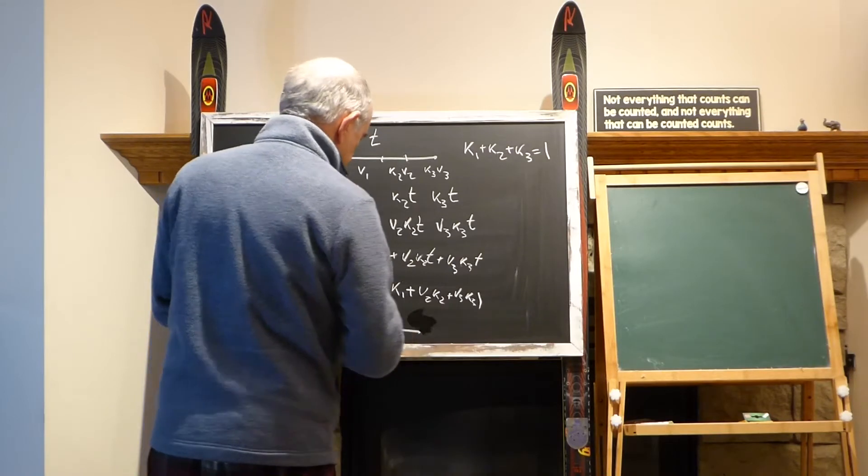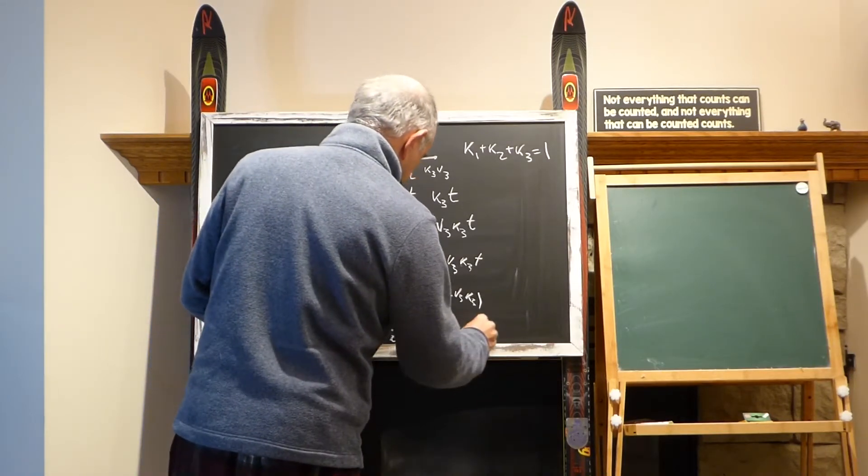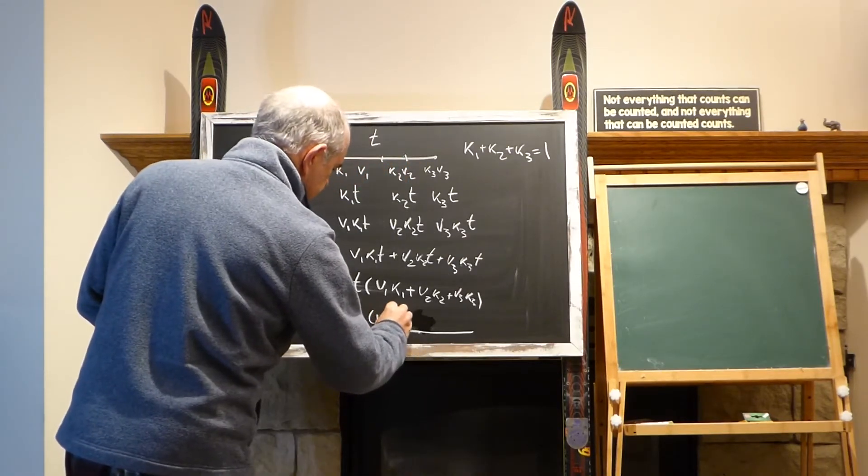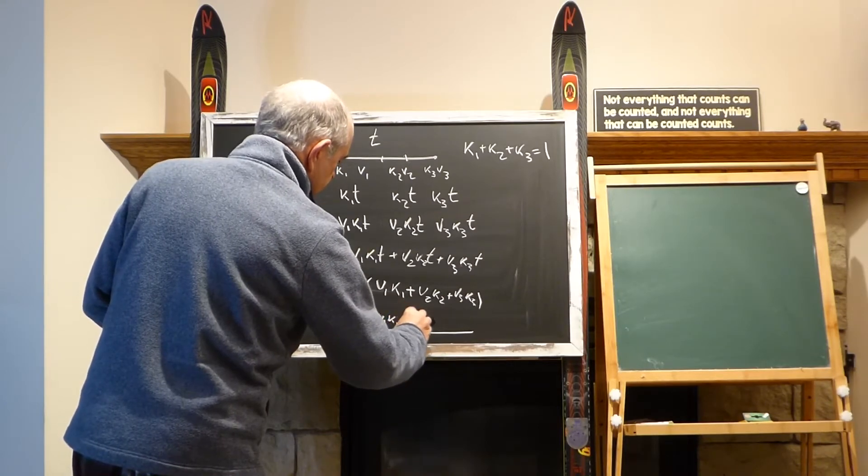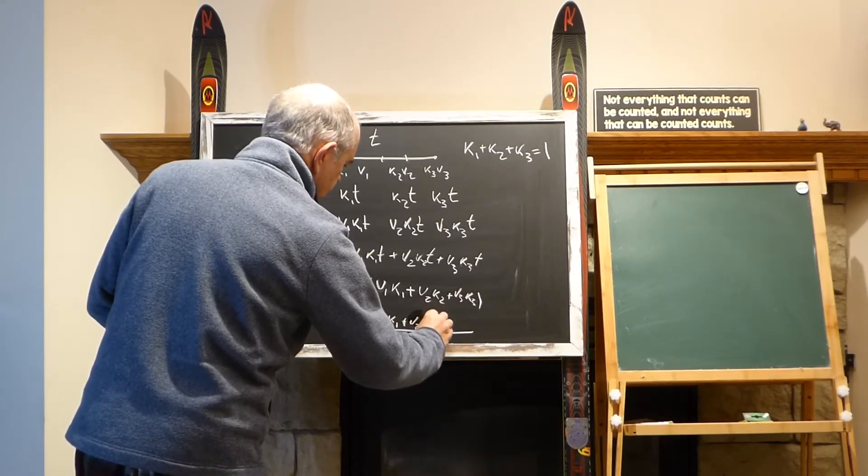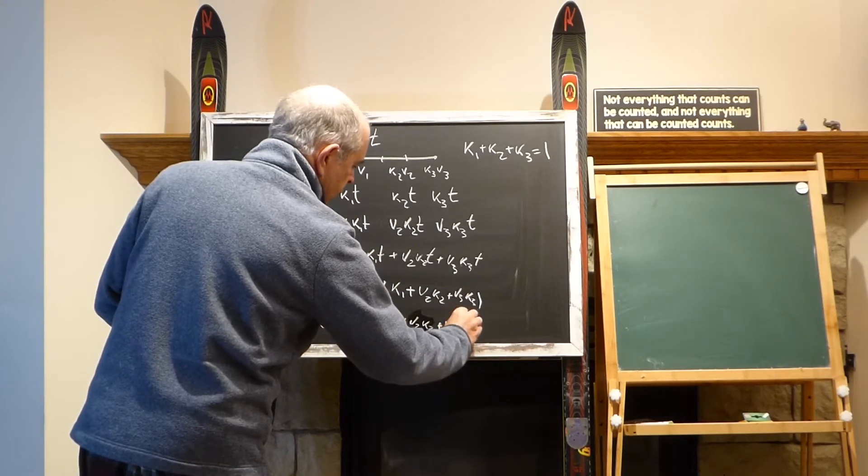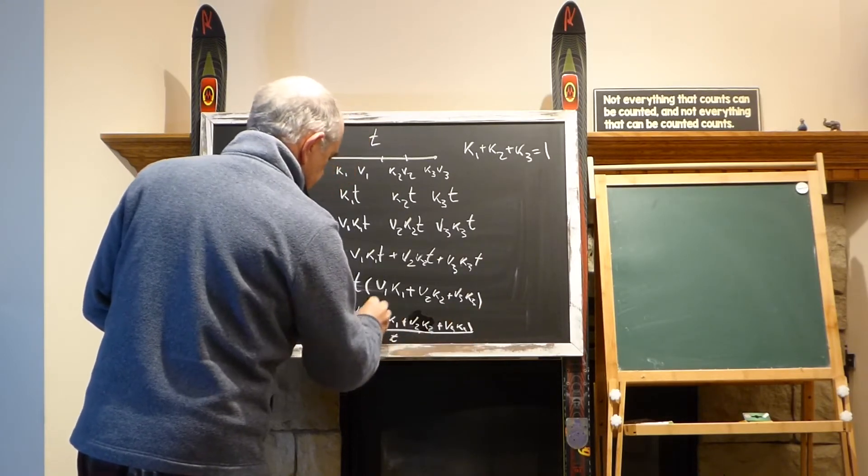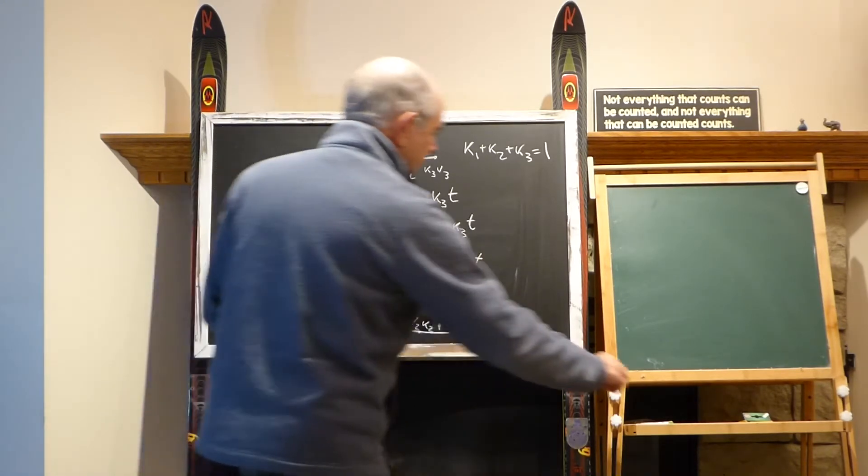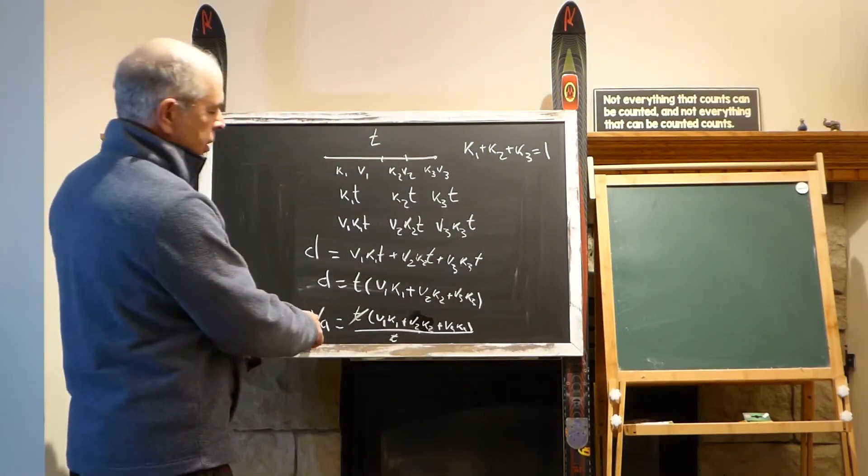Because v_average equals this d divided over time. Time and time cancel out, and brackets will remain. Inside the bracket would be this plus this plus this third one, and t would be gone. This would be average speed.